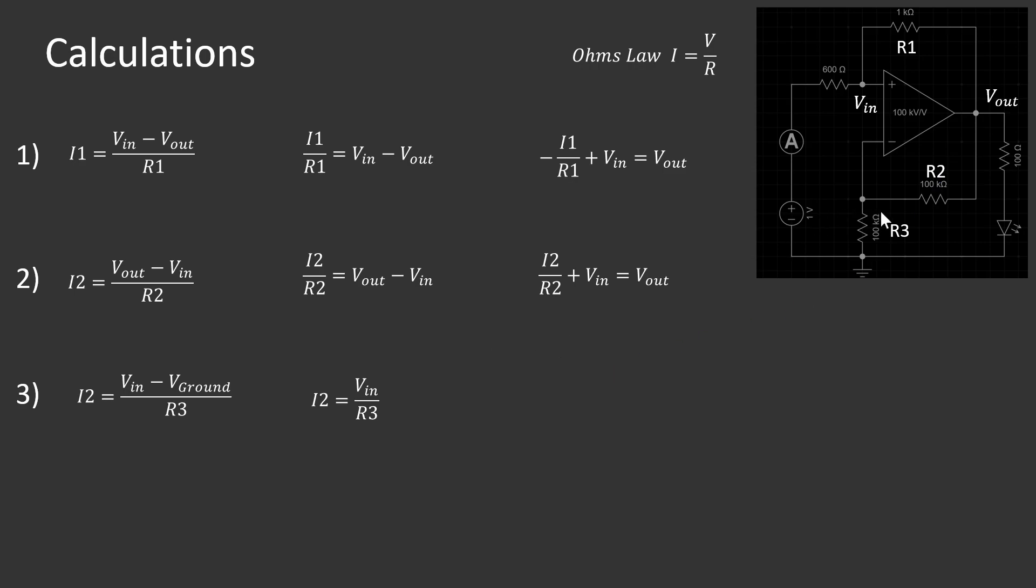So first of all, in order to make an equation that has R3 and V_in, we need to make an equation for each resistor, or an Ohm's law equation for each resistor, because when we add them together and simplify them, we'll be able to get an equation that includes V_in and R3. To do this, we're going to use Ohm's law, so I equals V over R, and make an equation for each resistor, or each point in the circuit.